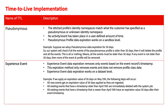For example, if we apply an expiration of 30 days on May 15th, the following things will happen: all new events get an expiration value of 30 days applied as they are ingested. All existing events with a timestamp older than April 15th — which is 30 days prior to May 15th — are immediately deleted by a system job. All existing events with a timestamp newer than April 15th receive an expiration value of 30 days after their event timestamp.